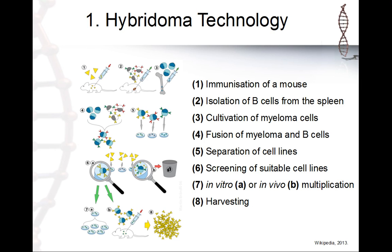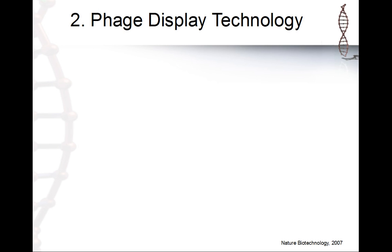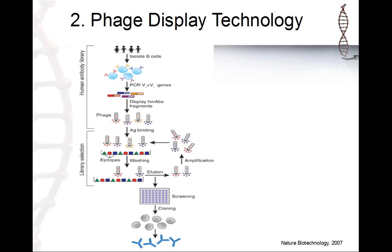The second technology is phage display. You can isolate B cells from human blood, take the B cells, perform PCR to get the genes — specifically the gene segments where gene rearrangement happened — take it from the mRNA, and clone it into phage. The phage displays the antibody on its surface and you make a screen with a plate full of epitopes, then perform biopanning — essentially making evolution.